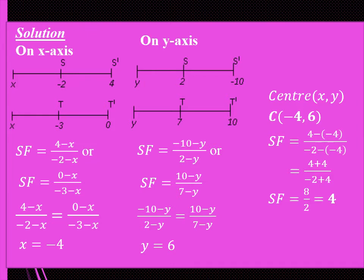We are going to look at the movement along the x-axis separately from the movement along the y-axis. On the x-axis, point S moves from negative 2 to 4, and also from negative 3 to 0. So we can set the scale factor as (4 minus x) over (negative 2 minus x) equals (0 minus x) over (negative 3 minus x). Equating the two expressions, we get x equals negative 4.